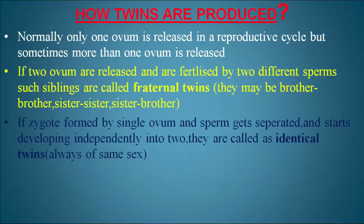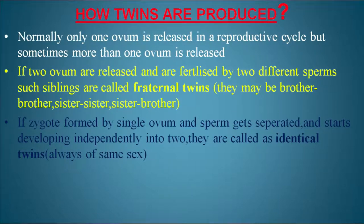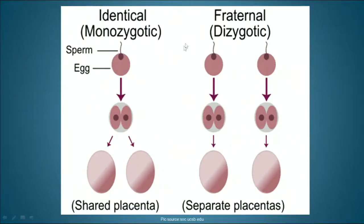Normally one ovum is released per reproductive cycle, but sometimes more than one ovum is released. If two ova are released and fertilized by two different sperms, the siblings are called fraternal twins — they may be brother-brother, sister-sister, or brother-sister. If the zygote formed by a single ovum and sperm separates and develops independently into two, they are called identical twins, which are always of the same sex. Identical twins are monozygotic (from one zygote); fraternal twins are dizygotic (from two separate zygotes with separate placentas).